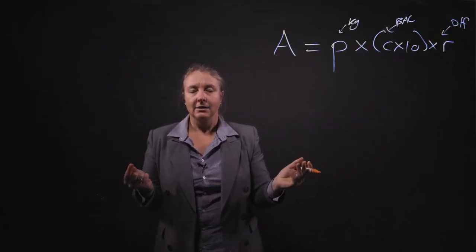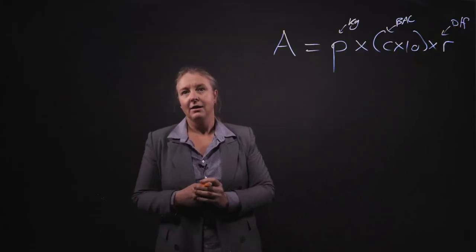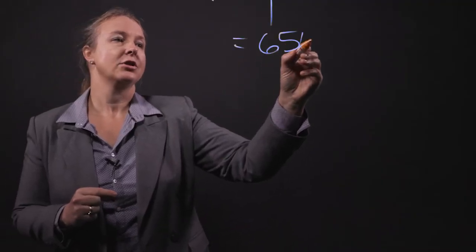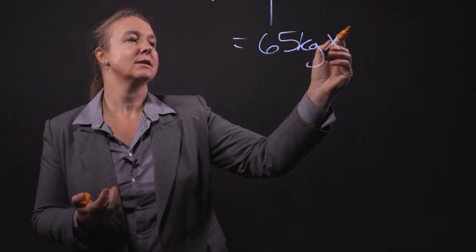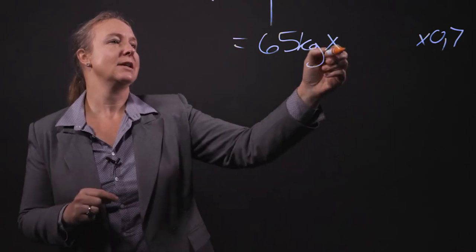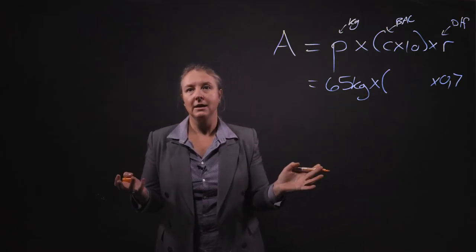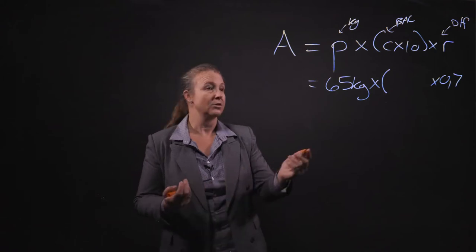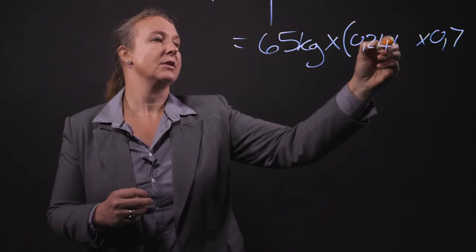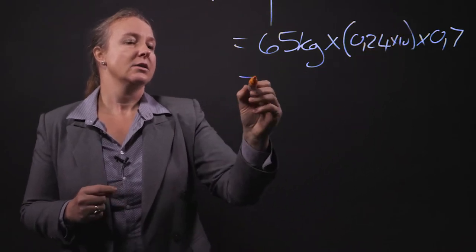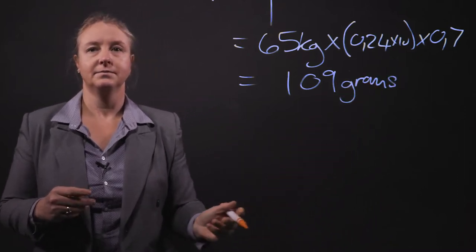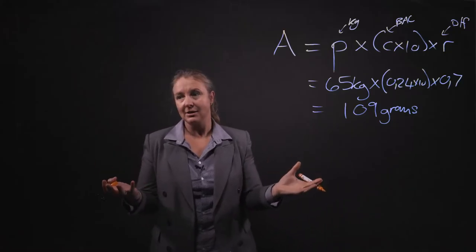Now let's look at a 65 kilograms gentleman, maybe of average weight, not too fat, not too lean. So his distribution factor would be like 0.7. And let's say his blood alcohol concentration comes back as 0.24 grams per 100 milliliters. Let's just times that by 10. So this would equal about 109 grams of alcohol. But now you still don't know how much he's actually consumed.